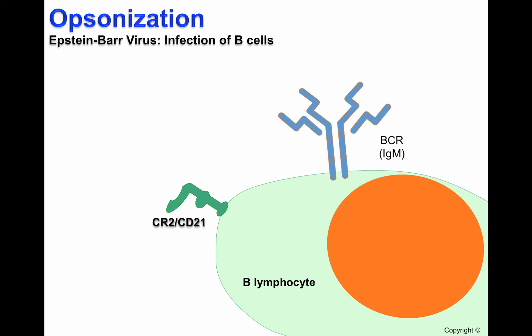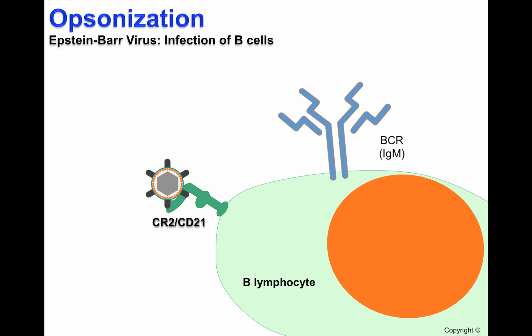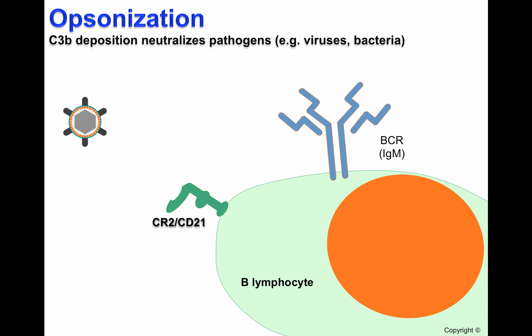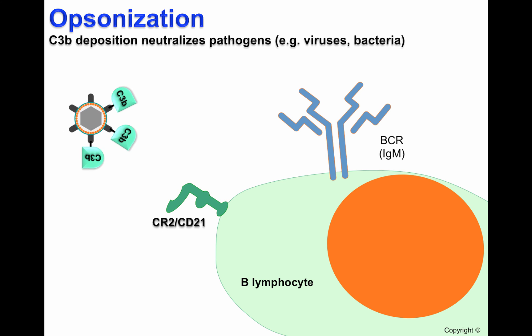The opsonization process may neutralize pathogens to infect host cells. Here, a virus called Epstein-Barr virus, or EBV, has the capacity to infect cells by binding to CR2, complement receptor 2, also known as CD21, which is found on B cells. EBV will cause a disease named mononucleosis. The opsonization of viruses with C3B molecules on the surface of EBV will interfere with the ability of the viruses to infect B cells.